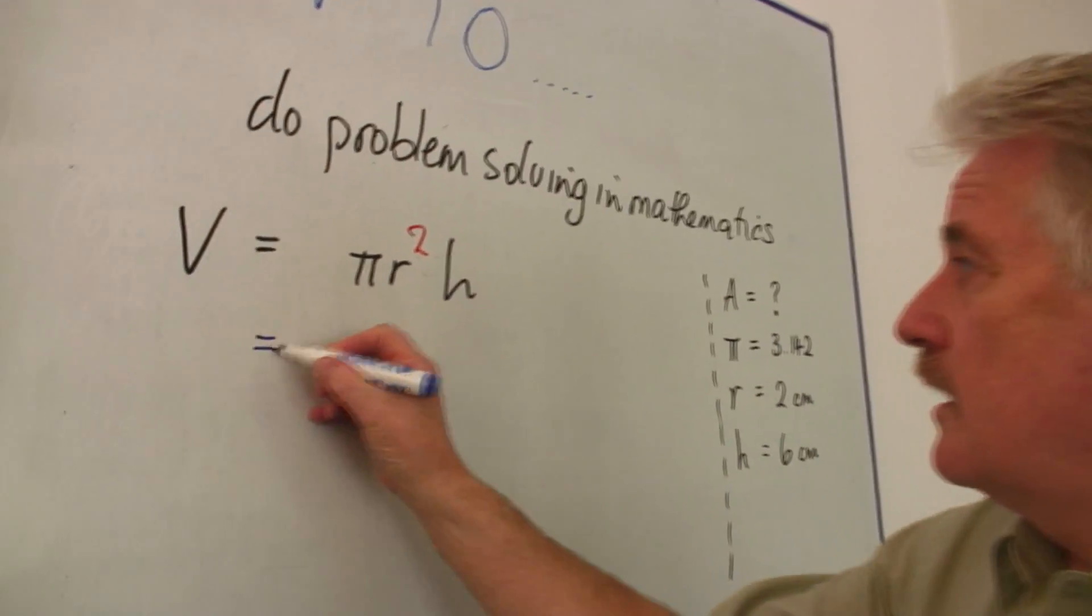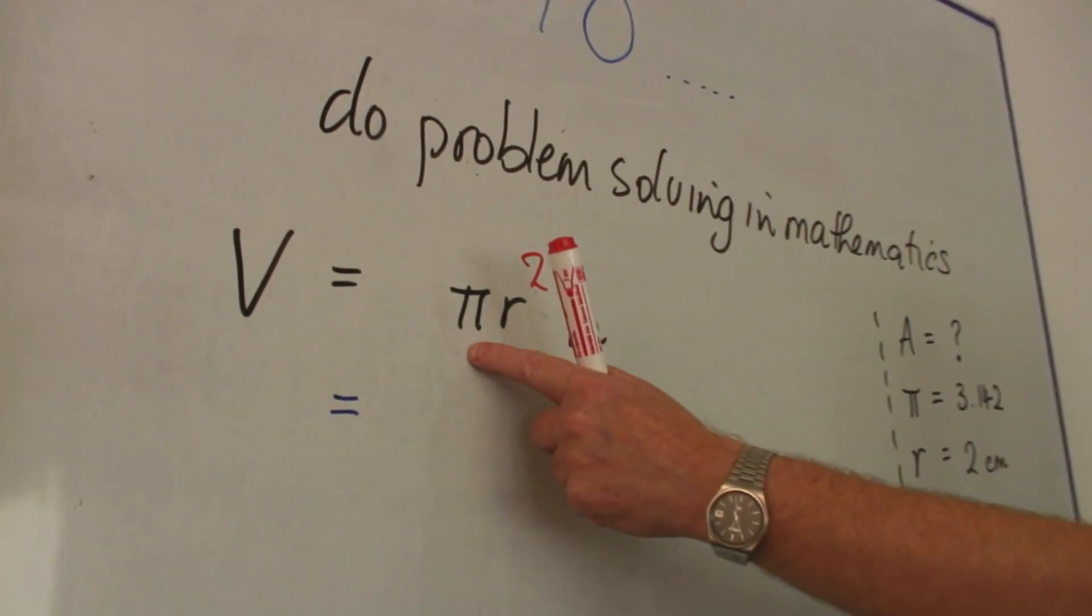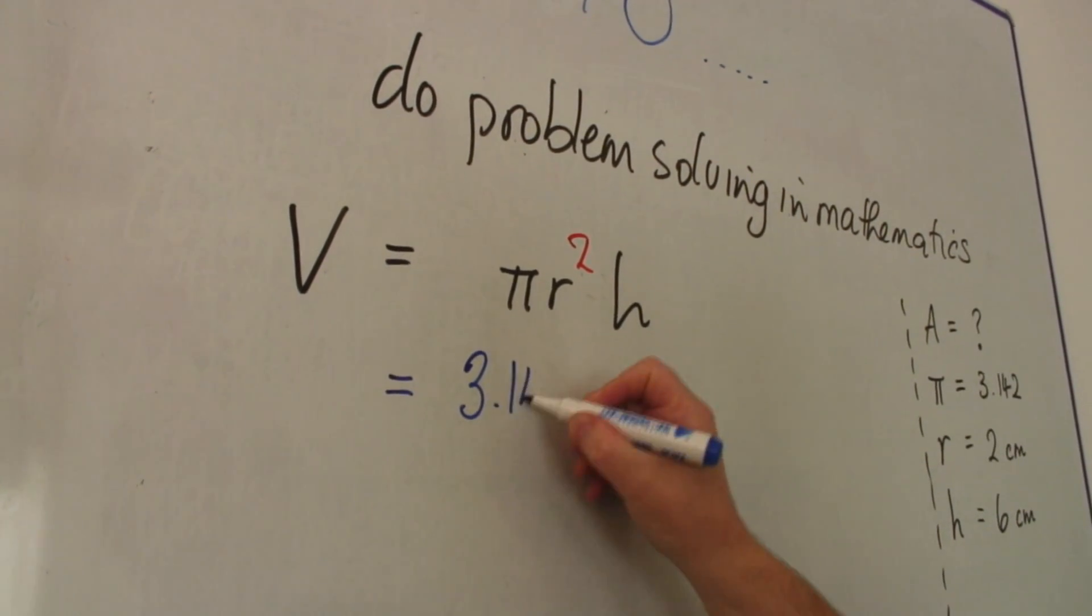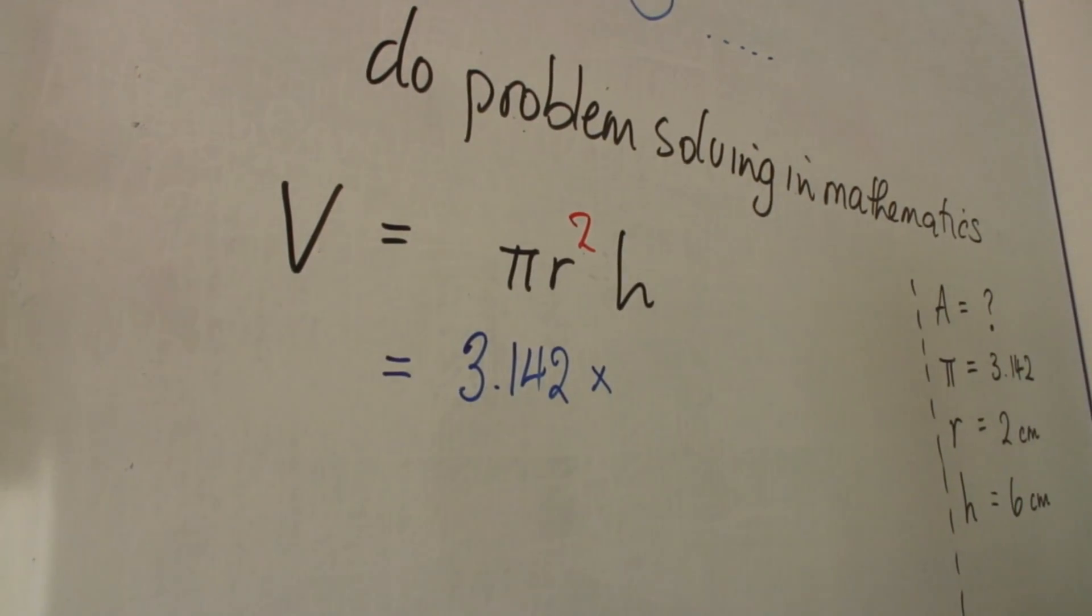So if we're going to do this, substitute in step by step for pi. So you can have 3.142, r squared.